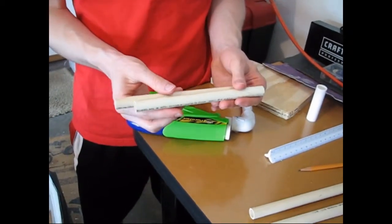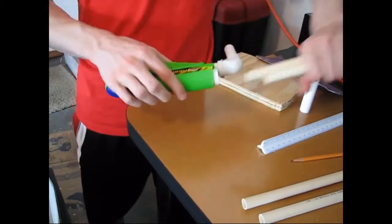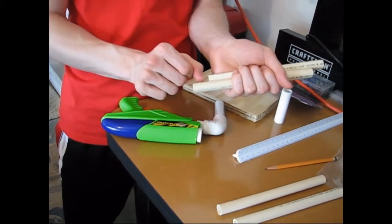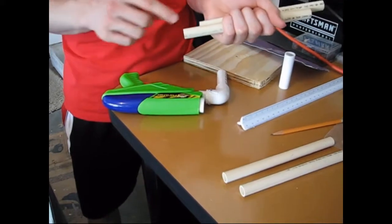Now the way a speed loader works is you have them glued together like this so you can just stick it in your barrel and then pull it out and stick it in. But of course you'll need to have enough room on here, the part that sticks out, so that you can actually get it in.